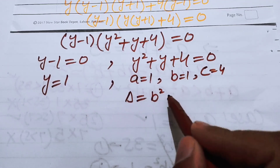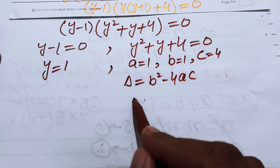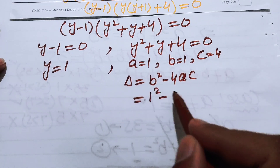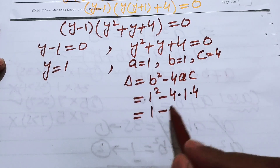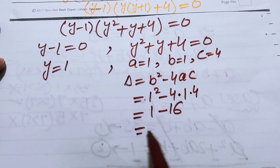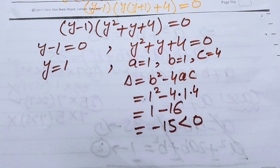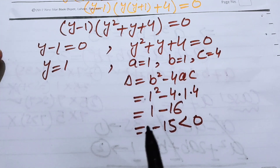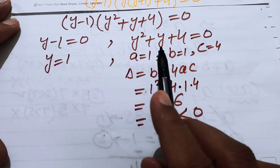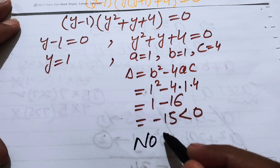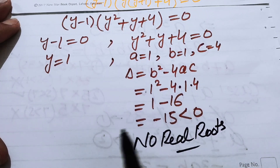The discriminant is Δ = b²−4ac = 1²−4(1)(4) = 1−16 = −15. Since Δ < 0, the quadratic y²+y+4 = 0 has no real roots. We reject this case as we need only real values.